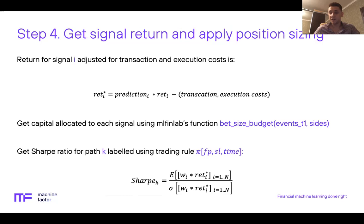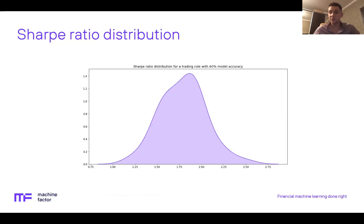We can then compute the Sharpe ratio for a synthetic path labeled by a given trading rule: the average of modified returns multiplied by capital allocations, divided by the standard deviation of capital allocations multiplied by modified strategy returns. Repeating this for each synthetic path gives a distribution of Sharpe ratios across all Monte Carlo simulations. Here we see a Sharpe ratio distribution for a trading rule combination with 60% model accuracy. Despite an average Sharpe ratio around 1.8, the distribution is quite volatile — some paths yield 2.5, others below 1.25 — illustrating why Monte Carlo simulation is essential for robust trading rule detection.